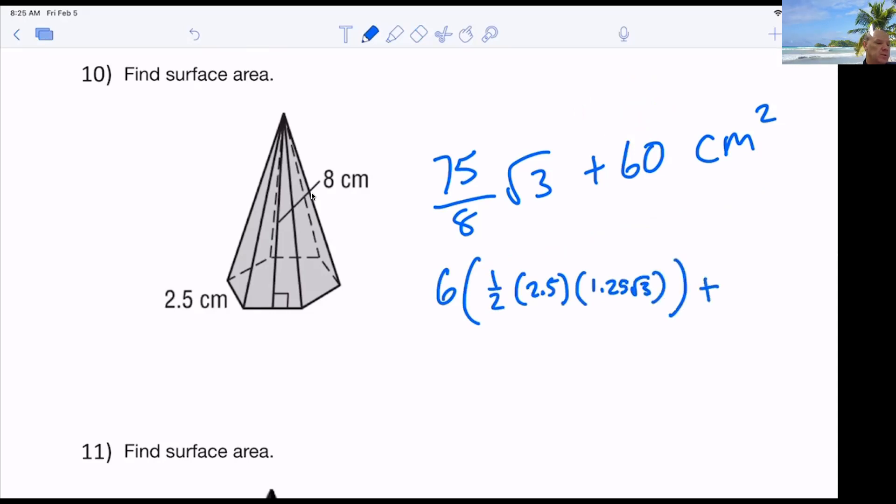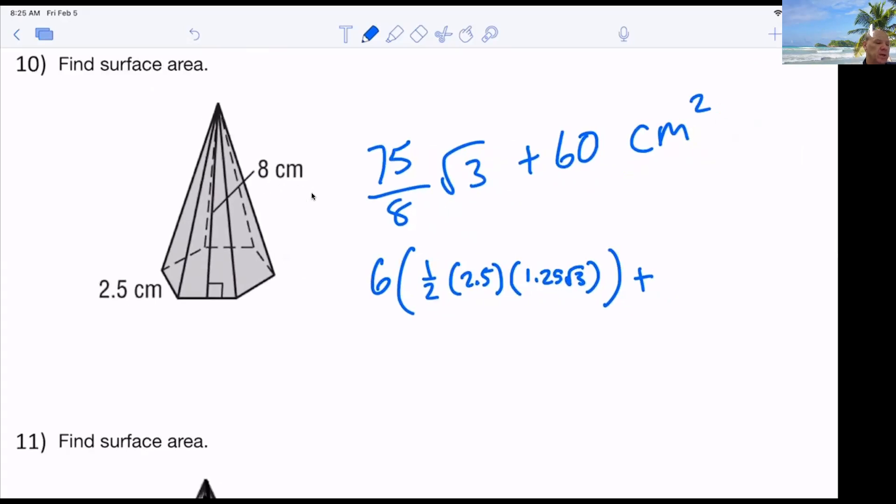Plus. And then we say one half the perimeter. Well, six 2.5s is what? 15. And the slant height looks like 8. So half of 8 times 15 is definitely 60. And then these, I like to say, is 5 fourths. And this is 5 halves. Six times half is 3. 3 times 5 times 5 is 75 over 4.